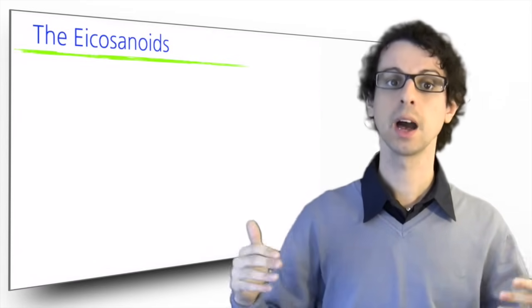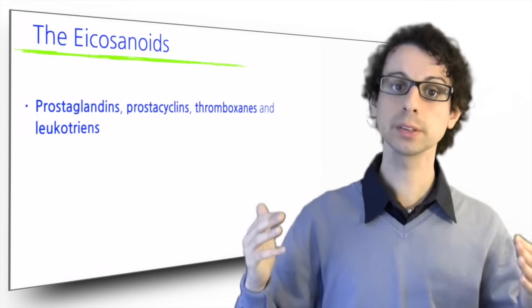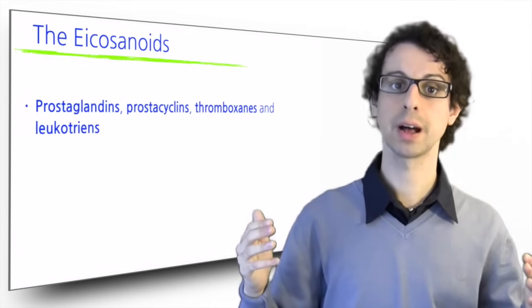The main classes of eicosanoids are prostaglandins, prostacyclins, thromboxanes, and leukotrienes.